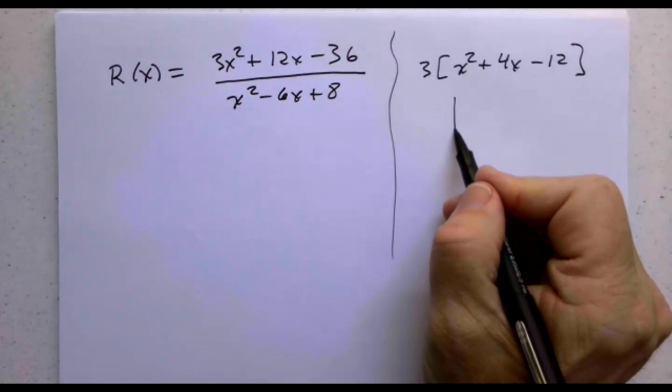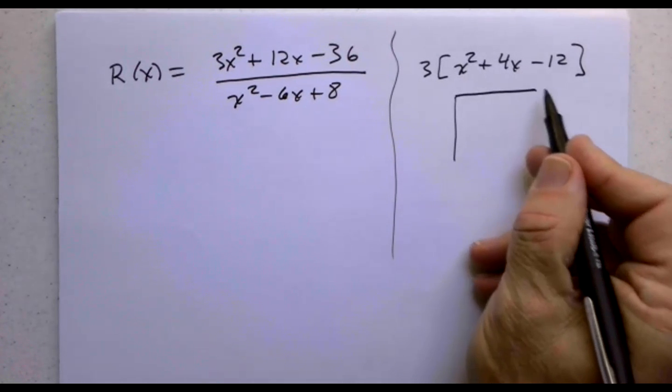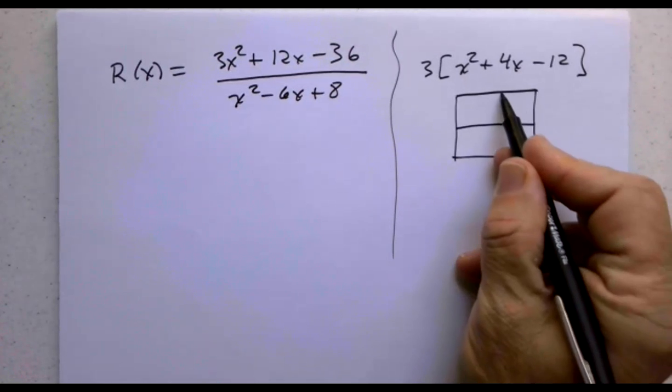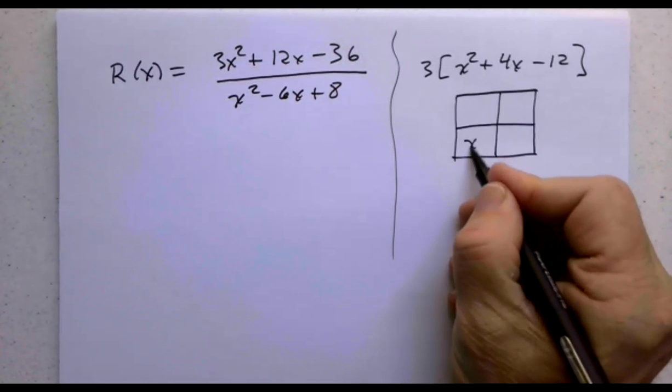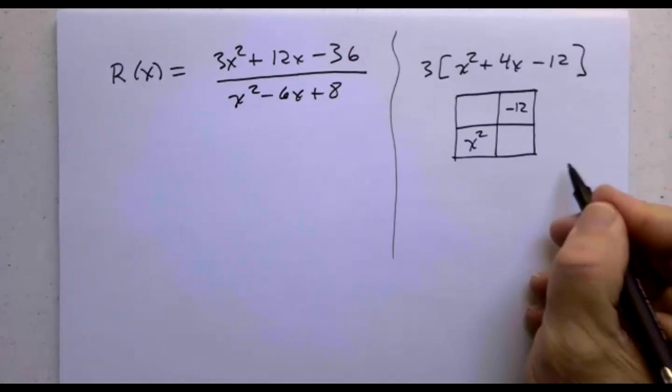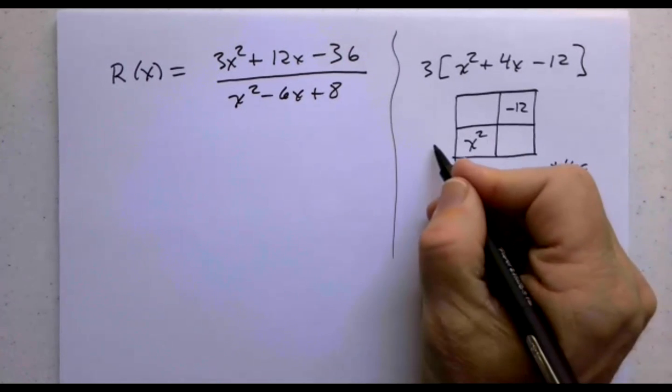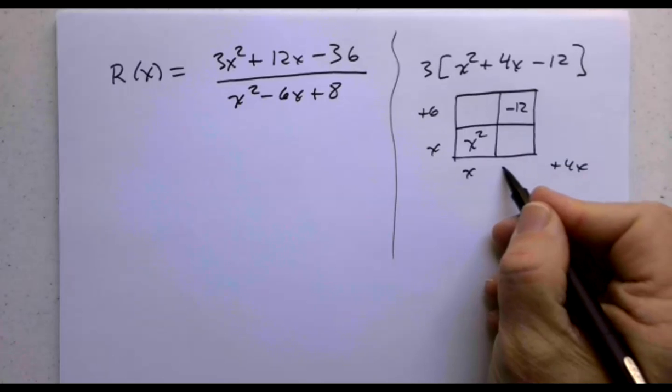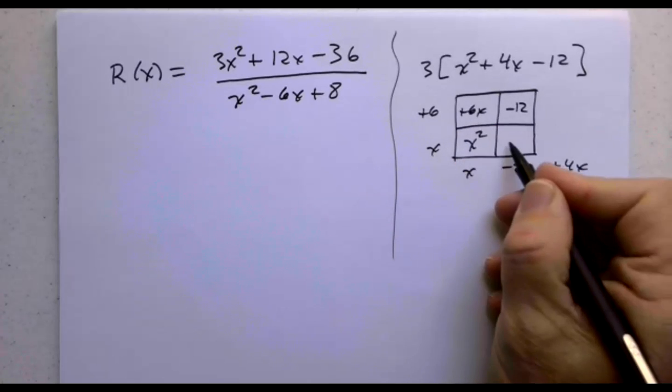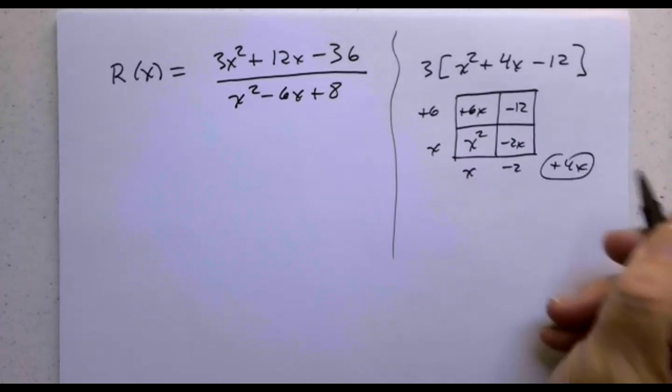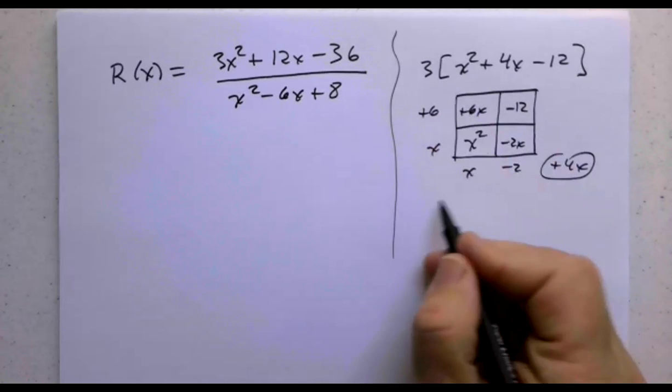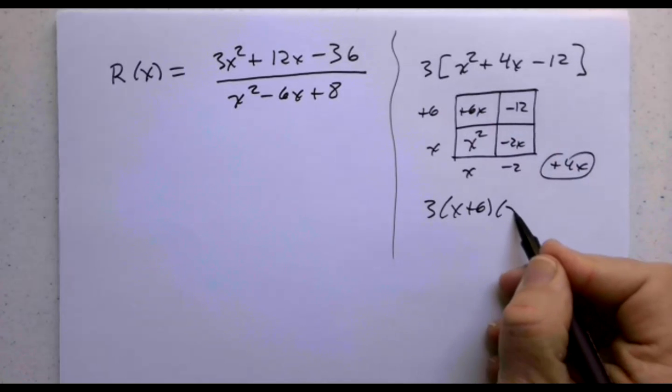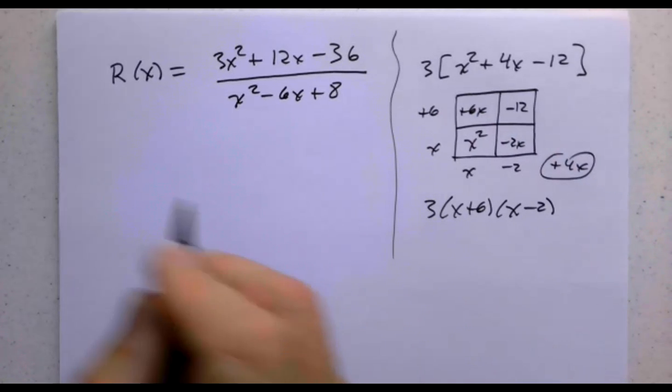Let's go ahead and factor that. x squared here, minus 12 here, plus 4x here. We get x times x, we get plus 6 times minus 2. So we get plus 6x minus 2x which is plus 4x. So we get 3 times x plus 6 times x minus 2.